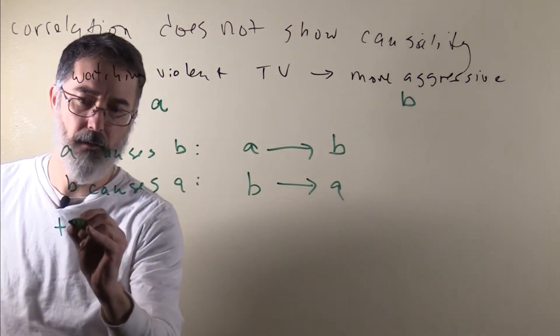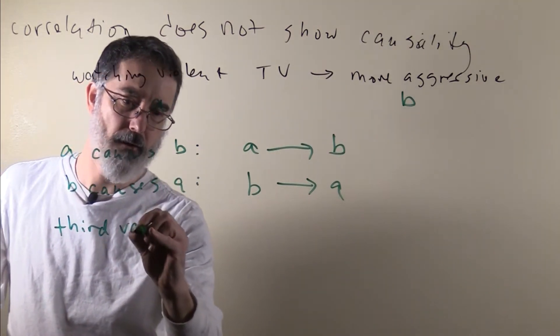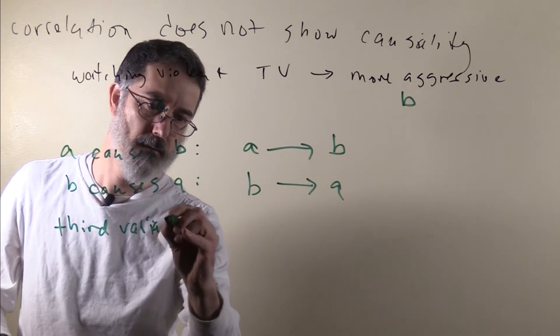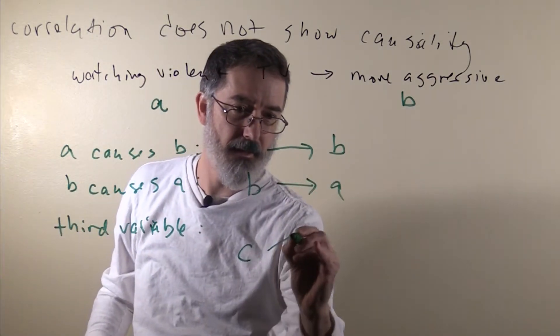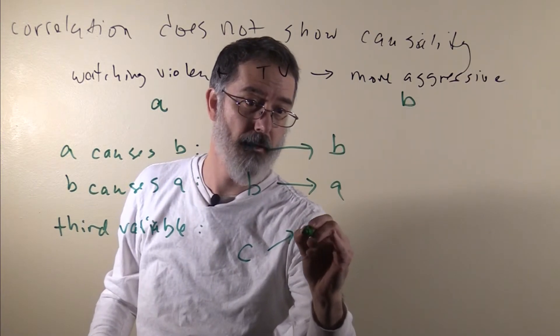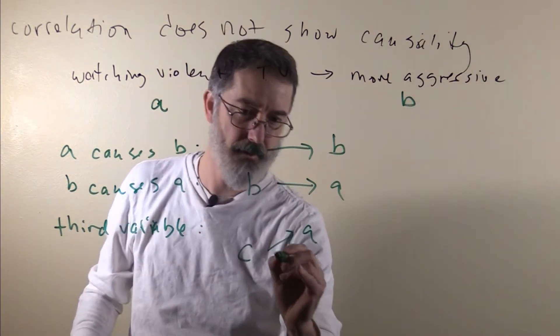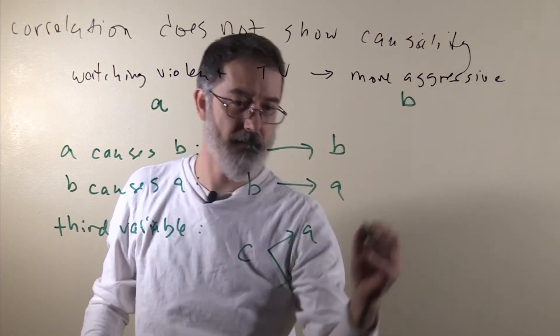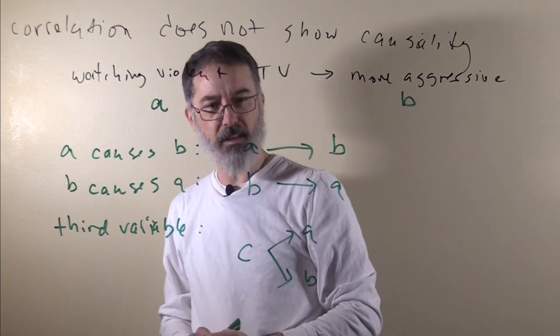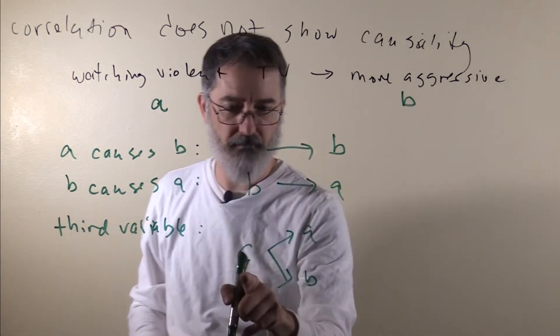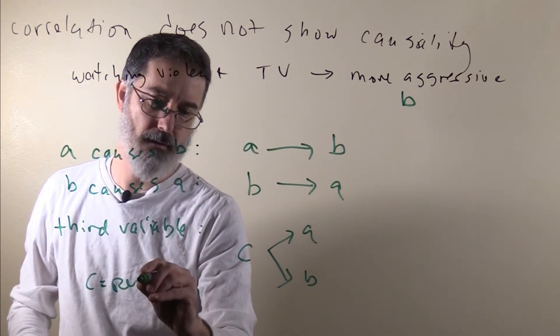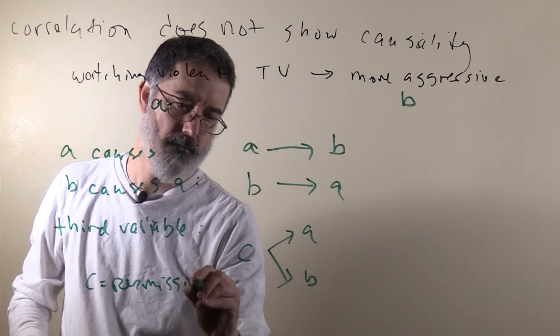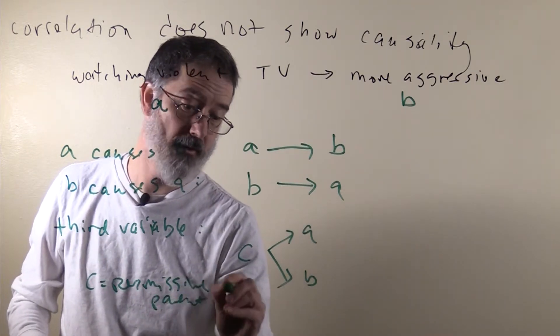Or there could be a third variable. We will call it C. And C could be causing kids watching violent TV and causing kids to be more aggressive. So this could be something like variable C. It could be, I don't know, like permissive parenting, or even neglectful parenting.